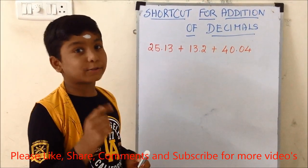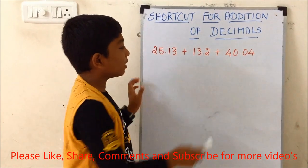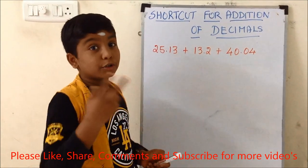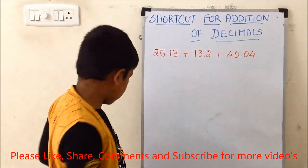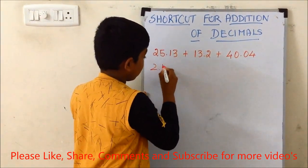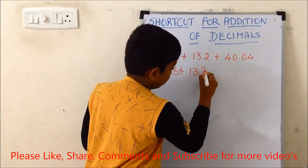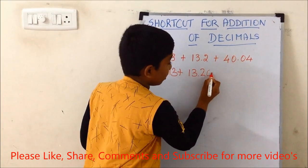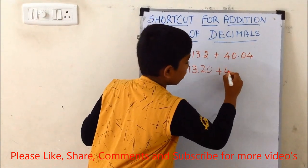Here there is one difference. In 25.13 there are 2 digits after the decimal point. In 13.2 there is only 1 digit, and in 40.4 there is also 1 digit. So what we need to do is: write the numbers down — 25.13 plus 13.20 (we add a zero behind the 2) plus 40.40, so all numbers have 2 decimal places.